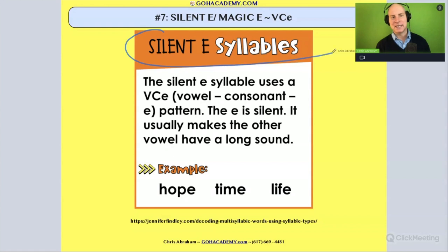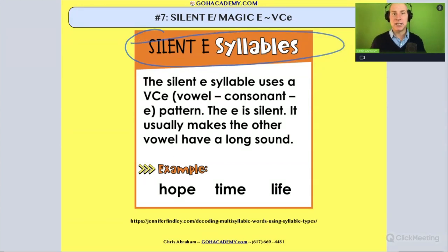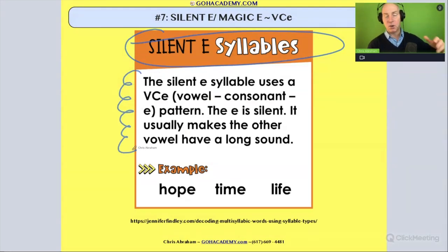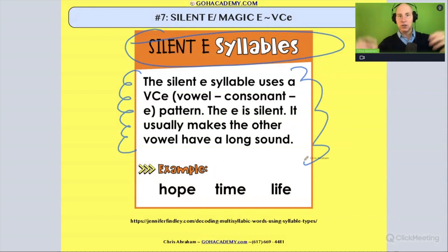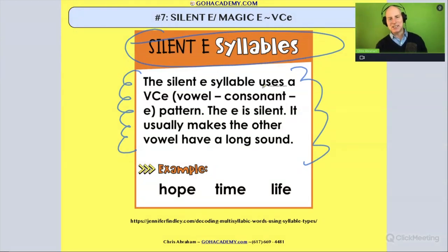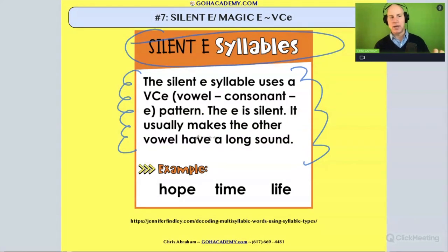This one is involving silent E syllables. Sometimes we think of it as magic E. I want you to take a moment and read this — you can pause me at any time. It says the silent E syllable uses a VCE (vowel-consonant-E) pattern. This E is silent. It usually makes the other vowel have a long sound.